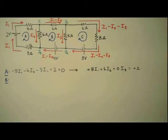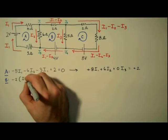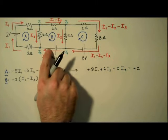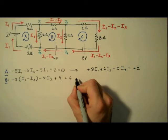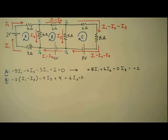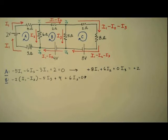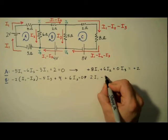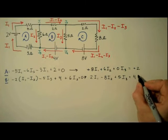For loop B we have minus 2 times I1 minus I2, the current there, minus 5I3, plus 4, plus, because we're going against the current, 6I2, equals 0. And to simplify, we'll distribute, combine like terms, and multiply through by negative 1. When we do, we get 2I1, minus 8I2, plus 5I3, equals 4.